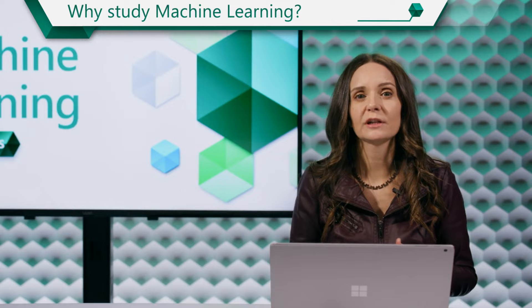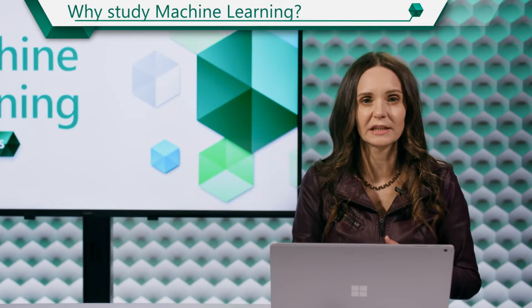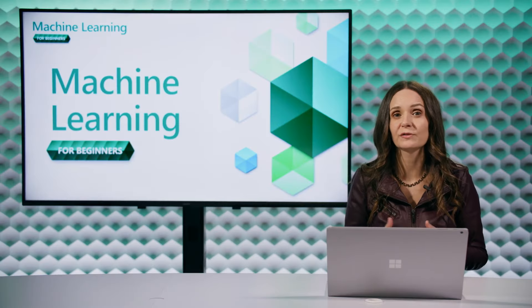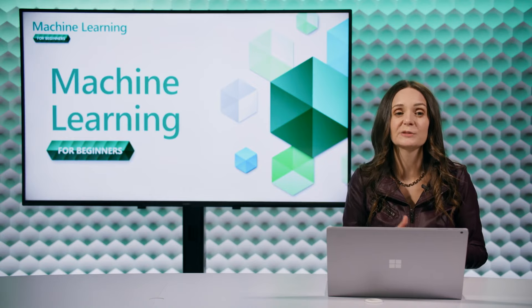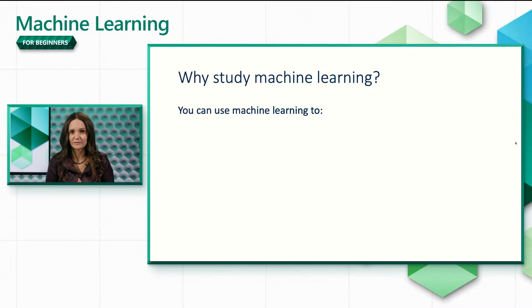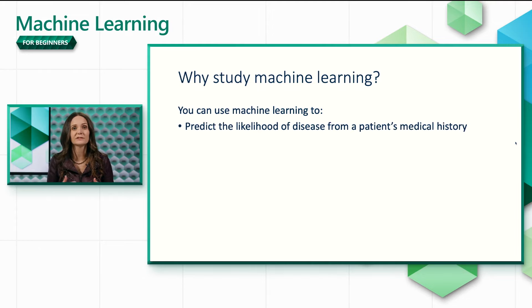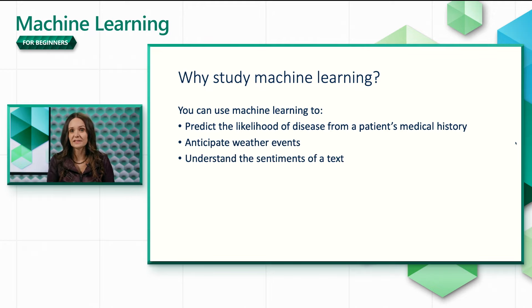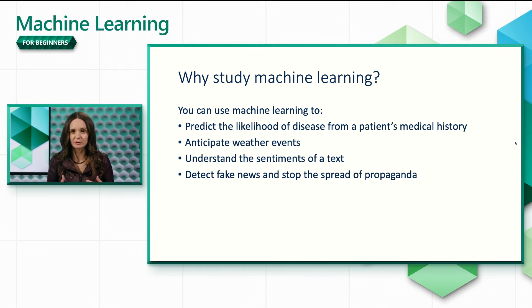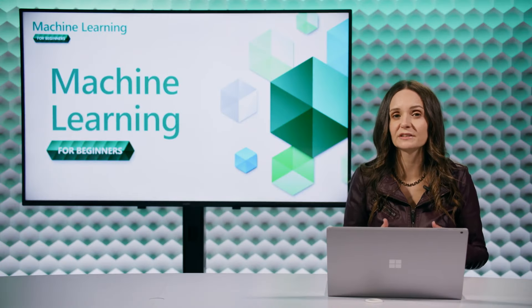Machine learning is a hot topic because it's solving complex real-world problems in so many areas. Finance, earth science, space exploration, cognitive science, and many more fields have adopted machine learning to solve problems specific to their domains. For example, you can use machine learning to predict the likelihood of disease from a patient's medical history, to anticipate weather events, to understand the sentiment of a text, and to detect fake news and stop the spread of propaganda. Applications of machine learning are almost everywhere and are as ubiquitous as the data flowing from our devices and systems. Because of how useful it is, understanding the basics of machine learning is going to help you no matter what domain you're coming from.